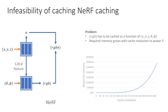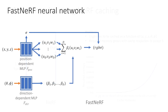To apply this caching scheme to NeRF, we would need to create a single cache for its five-dimensional input space. Such a cache would scale proportionally to the number of bins per dimension to the fifth power. Even for moderate cache resolutions, this means the cache size quickly becomes prohibitive. To make caching feasible, we propose a new graphics-inspired neural network architecture, which we call FastNeRF.